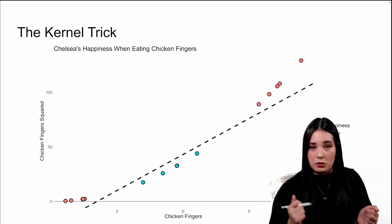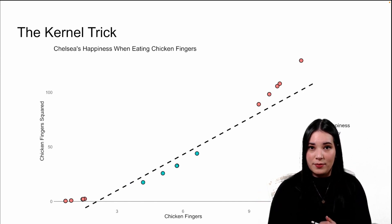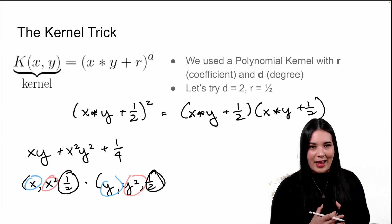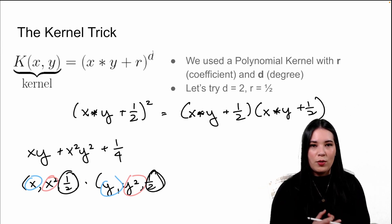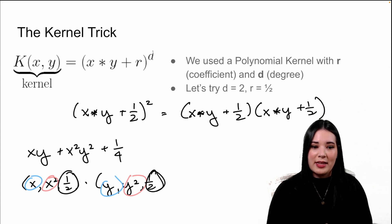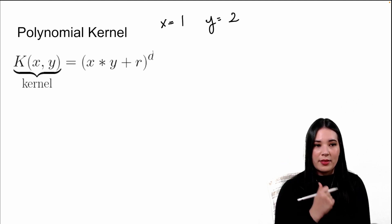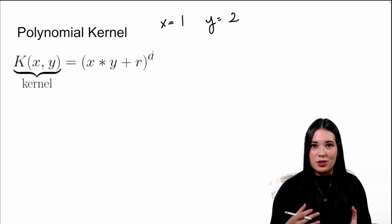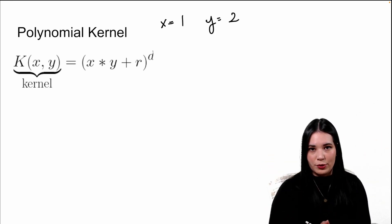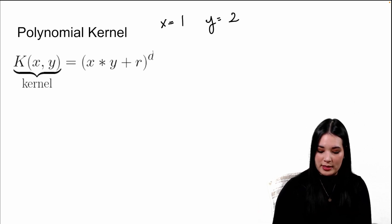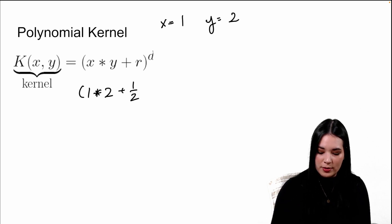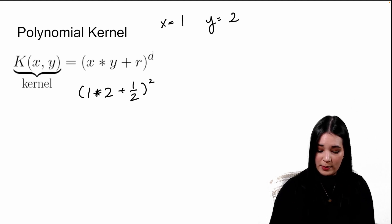Which looks really familiar to what we did with our chicken example. And notice that on this slide, I calculated these values without actually projecting my data into that second dimension. If I have two data points x equals 1, y equals 2, I can just plug them into my kernel function, and I can get their relationship as if I projected them into multiple dimensions without actually doing that projection. For instance, with these examples, I would get 1 times 2 plus one half — the coefficient we chose — to the second power.